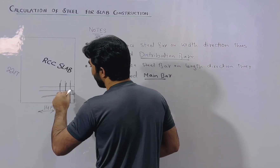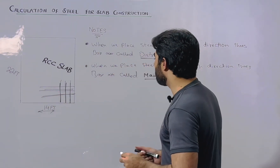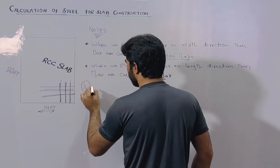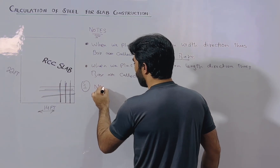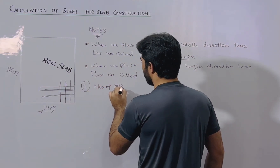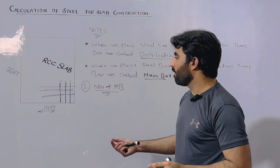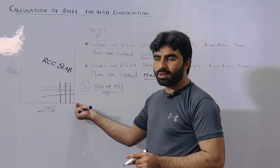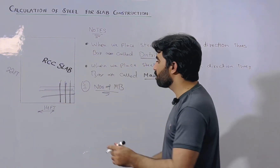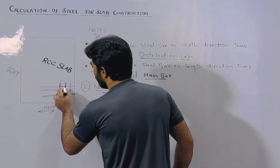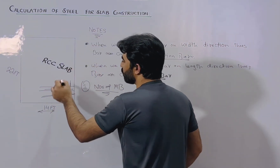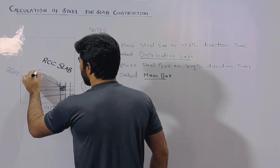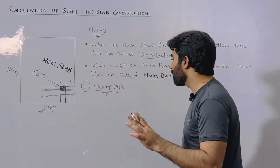Next, when we place steel bars on the length direction, those bars are called main bars. So, main bars and distribution bars — this is very important to know. When we place bars on the length direction, that is called main bars. The spacing between steel reinforcement is 6 inches center to center, or 0.5 feet.